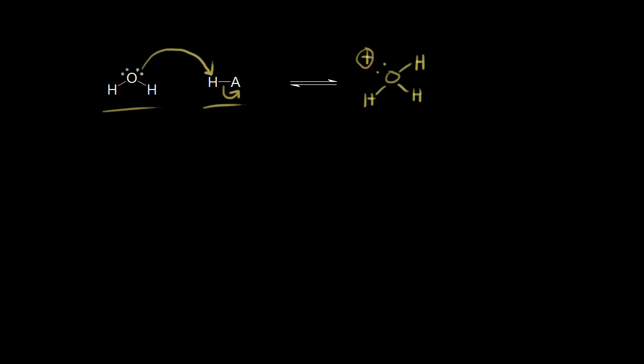Let's look at this acid-base reaction. Water's going to function as a base, and it's going to take a proton off of a generic acid, HA. A lone pair of electrons on the oxygen picks up this proton, leaving these electrons behind on the A. Oxygen is now bonded to three hydrogens, so it picked up a proton. That's going to give this oxygen a plus one formal charge. These two electrons in red are going to pick up this proton, forming this bond, so we make hydronium, H3O+.